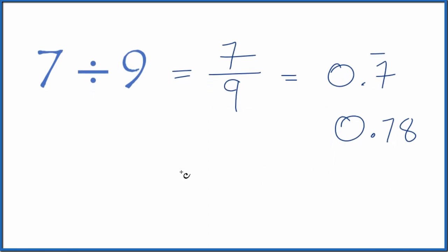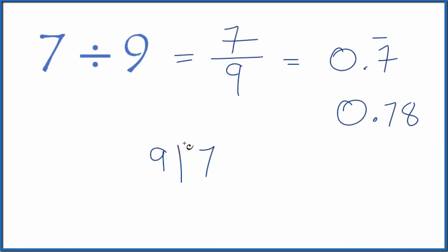We could also take and divide 7 by 9 longhand. So 9 doesn't go into 7. We could call this 70 as long as we put a 0 and a point up here.